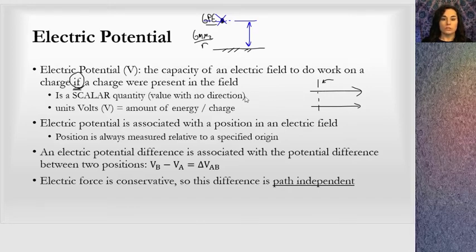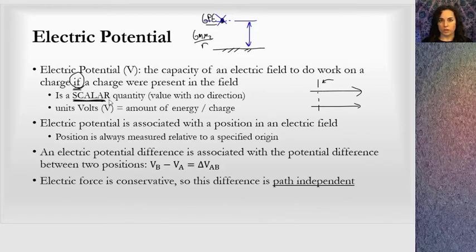Electric potential is a scalar quantity, and I'm noting this very distinctly early in the lesson because I've seen students get caught up — we've been working with electric fields and electric force, decomposing vectors and thinking in terms of vectors — but electric potential is a scalar, which means it does not have direction. You cannot decompose it. You just add it like numbers.